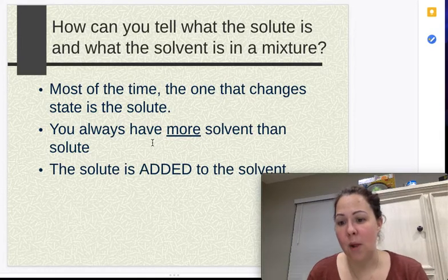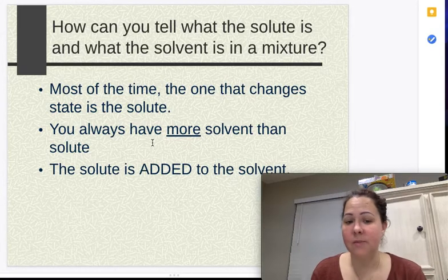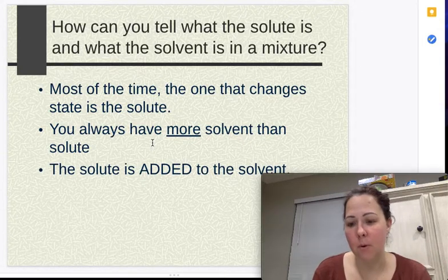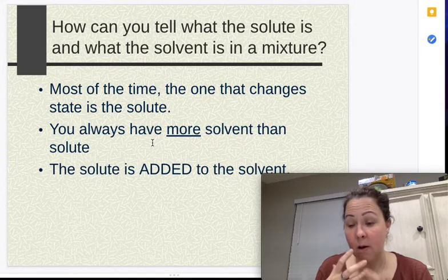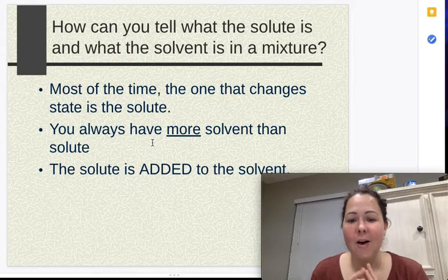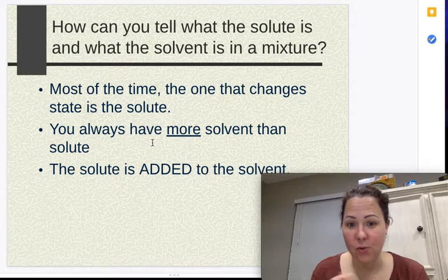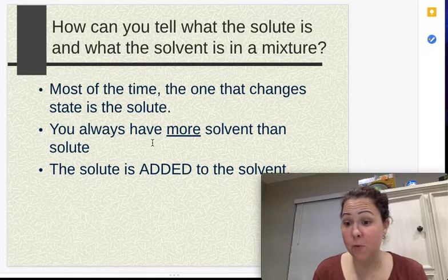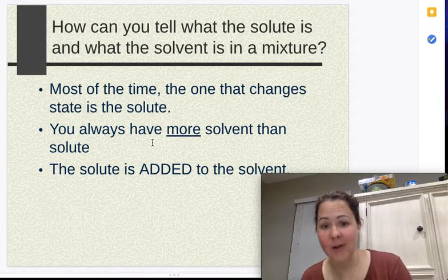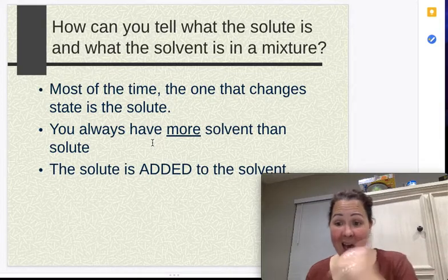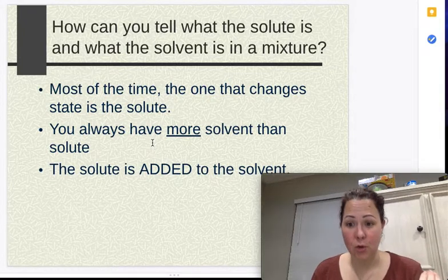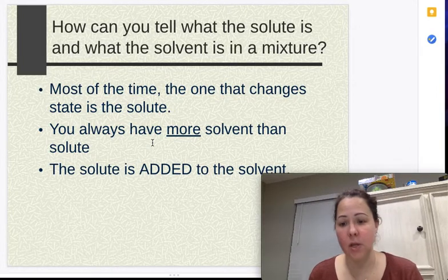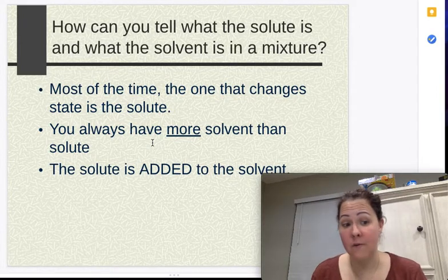And then also the way that it's worded. Sometimes it'll say like, this is added to this. That's your big way of knowing which is your solute and your solvent. So it might say like red food dye is added to water. The red food dye, because it's added to the water, is your solute. Your water is your solvent. So you have to look at how it's actually worded in order to figure that out.